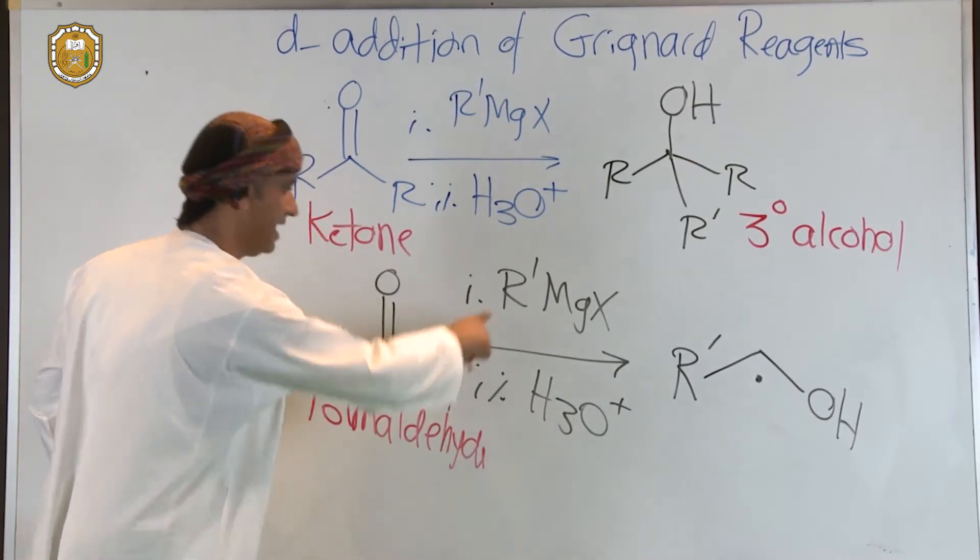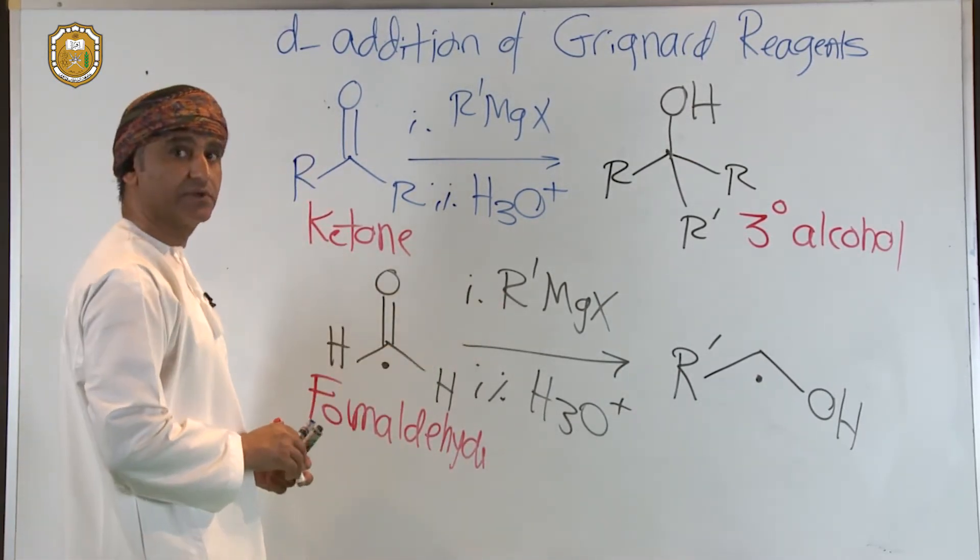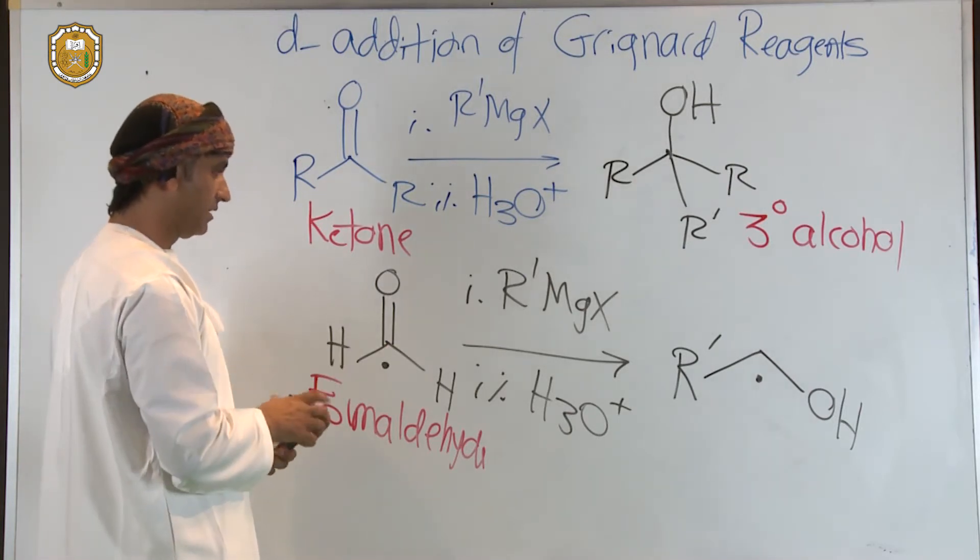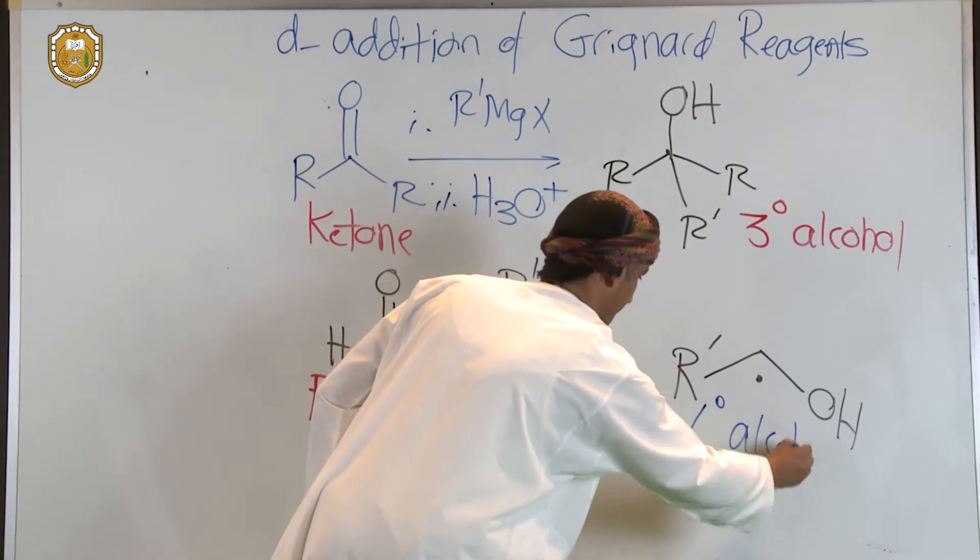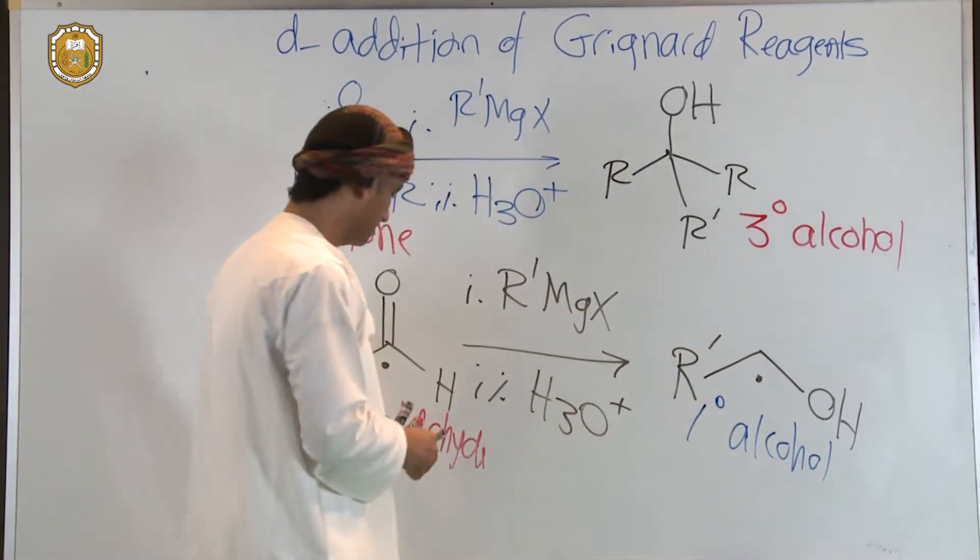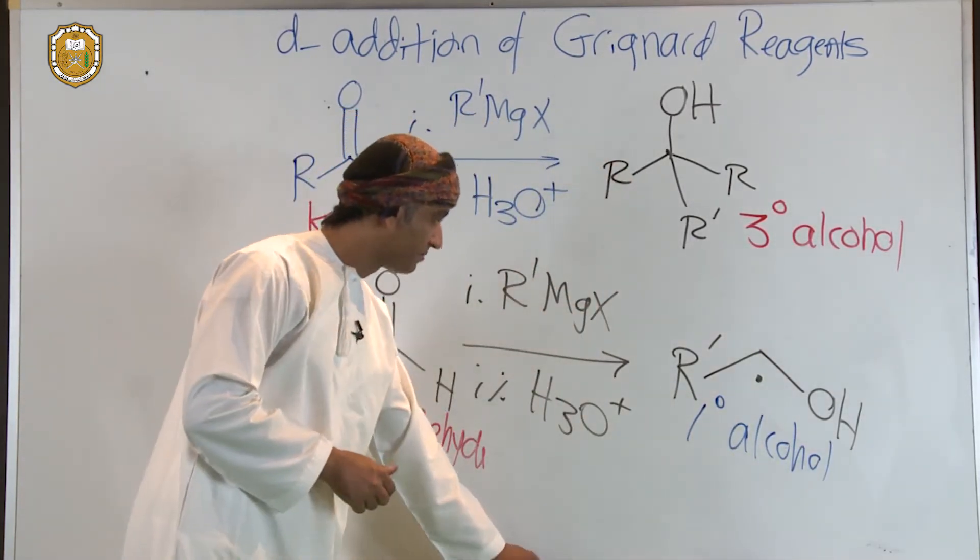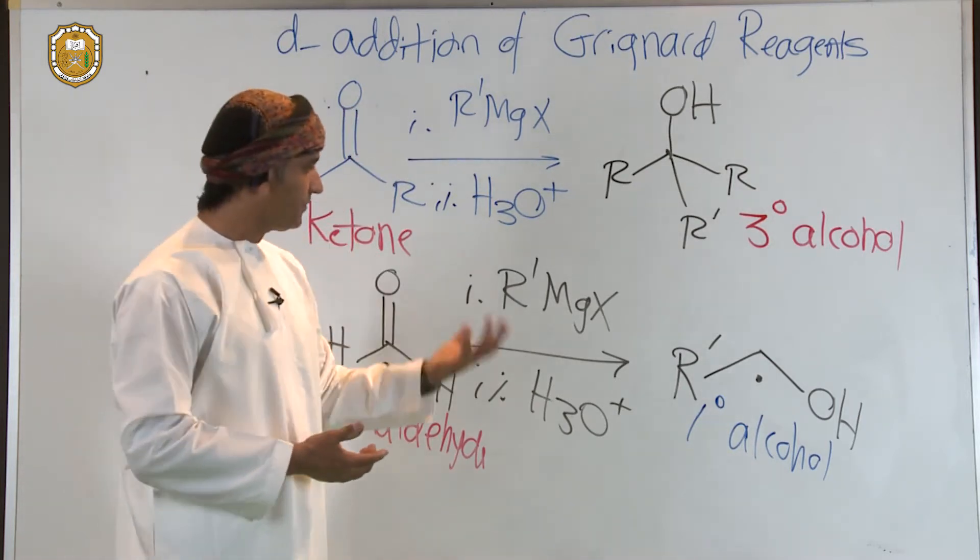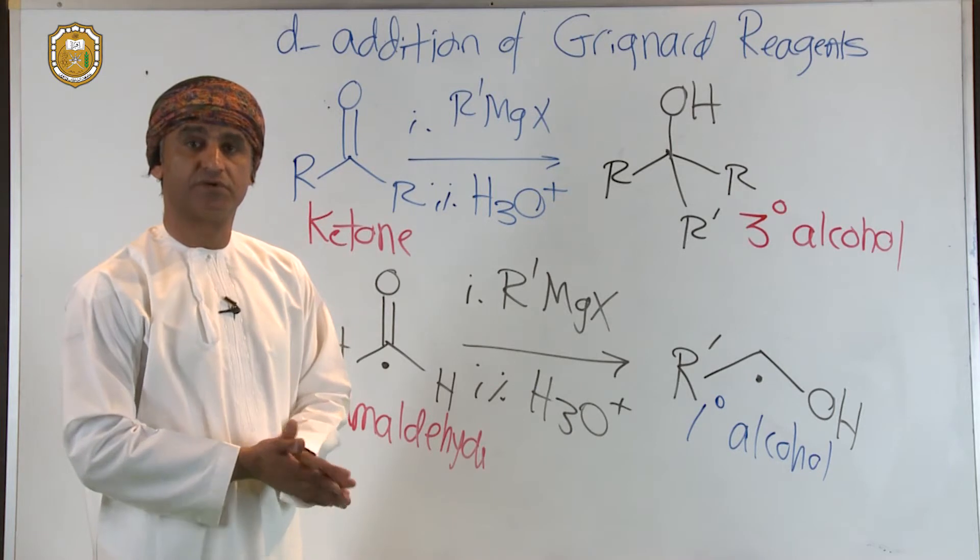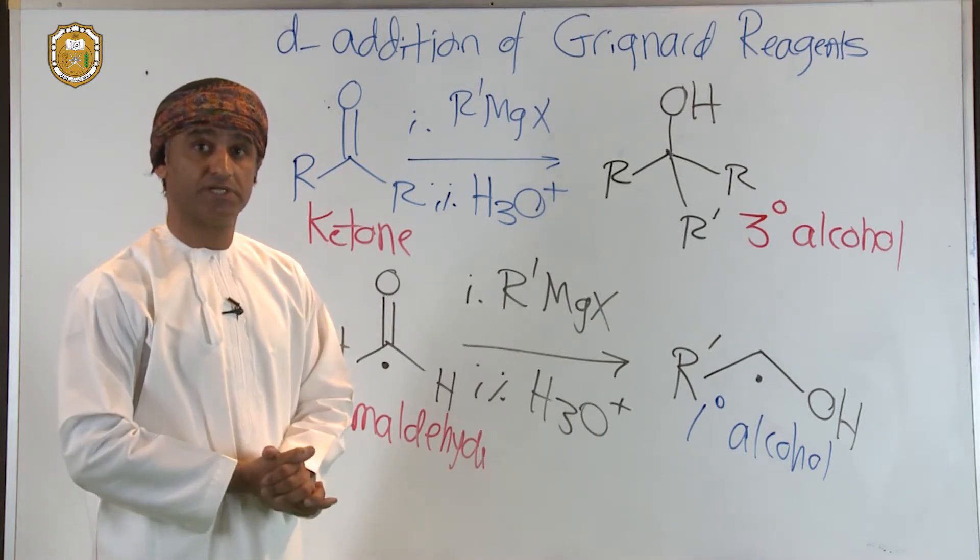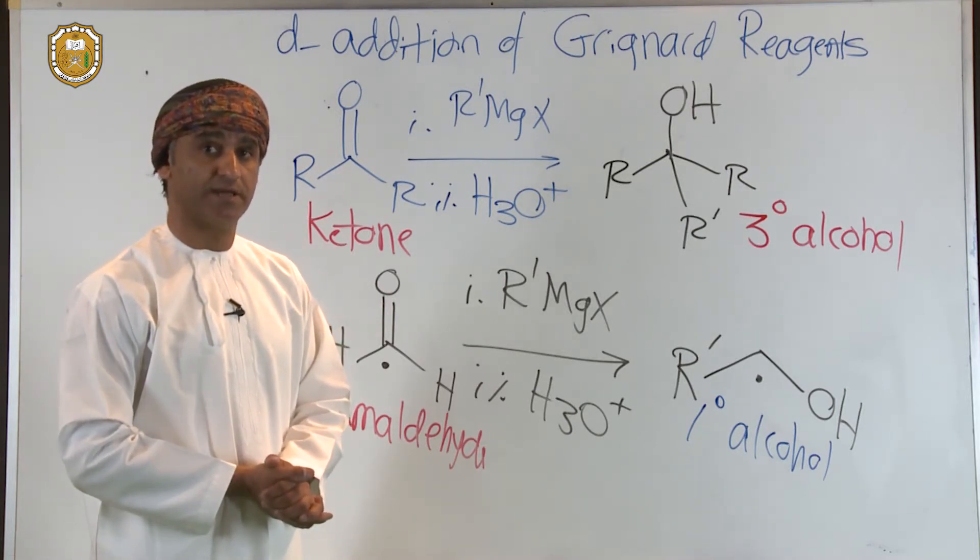And if formaldehyde reacts with the Grignard reagent, as in this case, the alcohol that's produced is a primary alcohol. So these two schemes now represent two additional reactions or applications of the Grignard chemistry or the Grignard nucleophilic addition on carbonyl compounds.